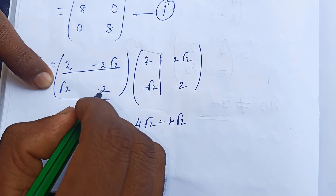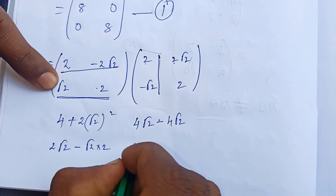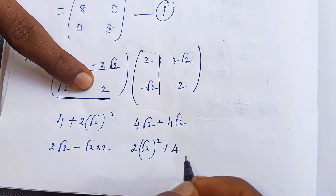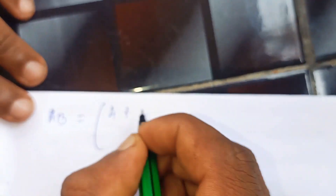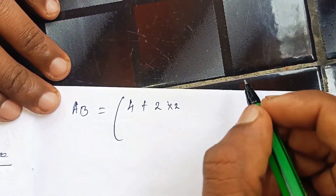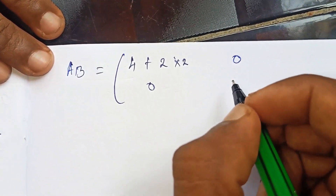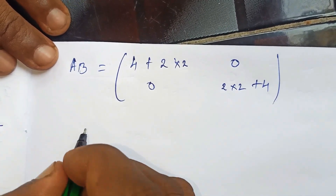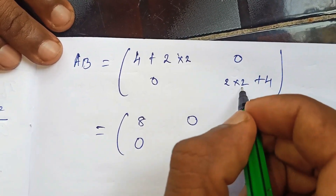Second row, second column: √2 × (-2√2) plus 2×2, where the √2 × √2 terms simplify. After all simplifications, positive and negative terms cancel for the off-diagonal entries giving zero. The diagonal entries give 4+4 = 8 each. So BA = [8, 0; 0, 8]. This is equation number two.